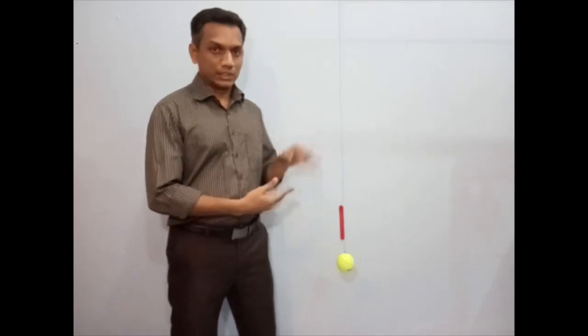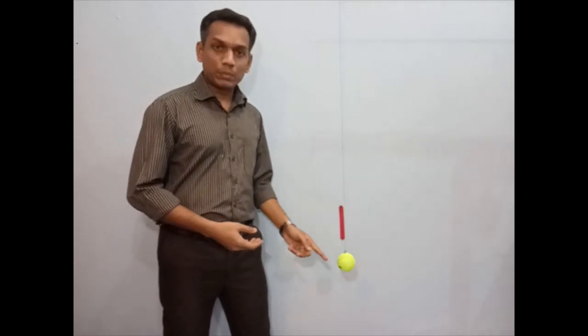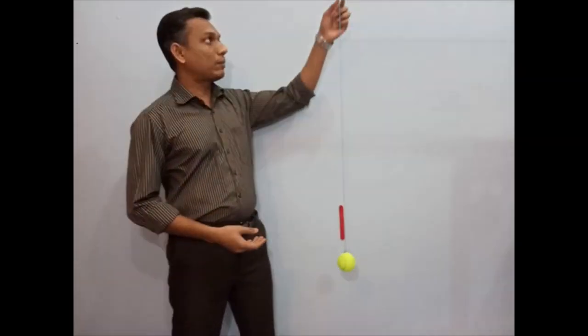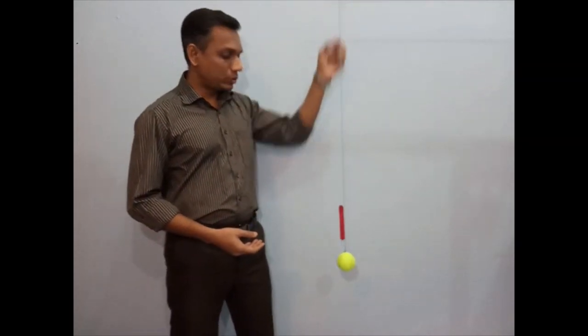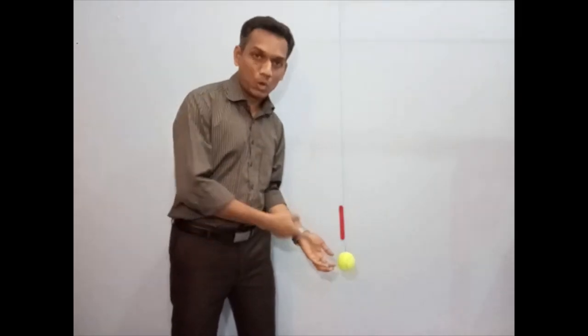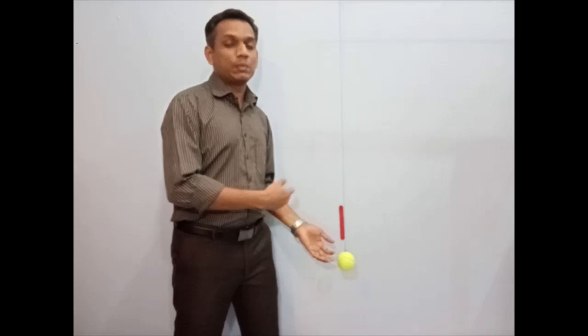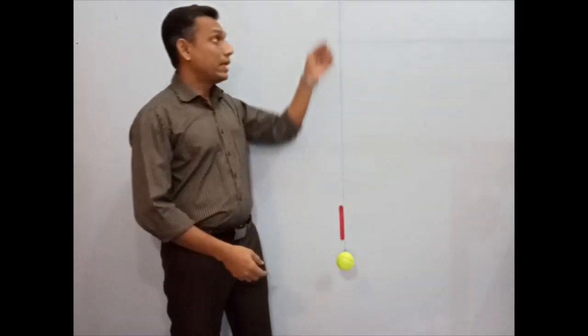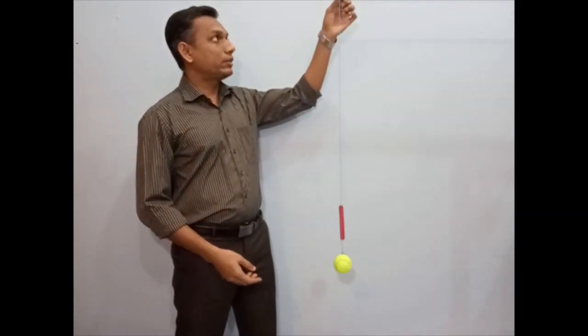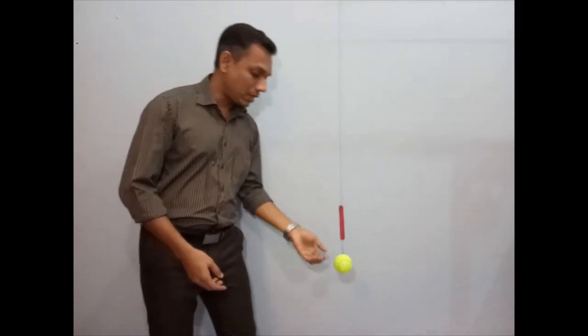What is the use of the simple pendulum? Two quantities can be measured using this setup. One is length of the simple pendulum, that is from where it tied to the half of this ball. Repeating, first quantity which can be measured using simple pendulum is length. Length means the point at which it tied to the half of this ball.